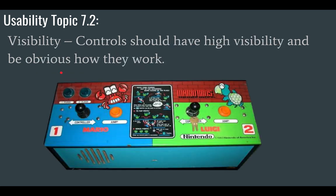Visibility: controls should be highly visible and it should be obvious how they work. Here's a game controller — it's pretty obvious how this works. This joystick moves you back and forth, this button is jump, and you have one player and two player options. It's easy to figure out what you're supposed to do with the labeling, and the joystick only moves left and right, so you absolutely know that's what you should be doing.